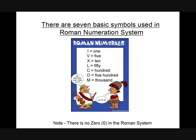There are seven basic symbols used in the Roman numeration system. These are the Roman symbols for one, five, ten, fifty, hundred, five hundred, and thousand. The symbols are known as Roman numerals and their corresponding values are known as Hindu-Arabic numerals.